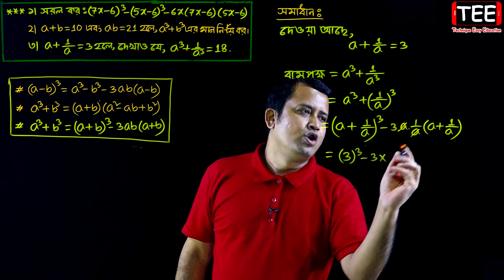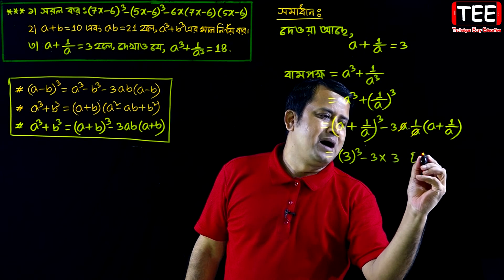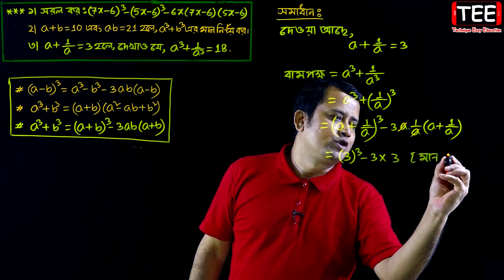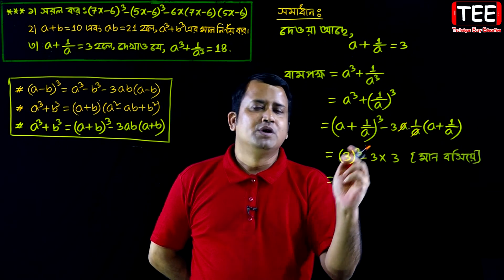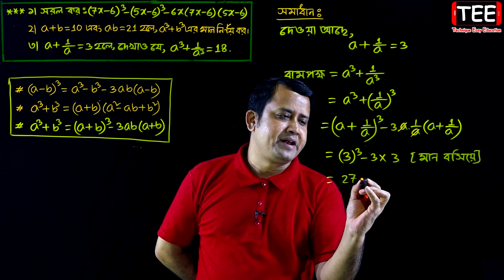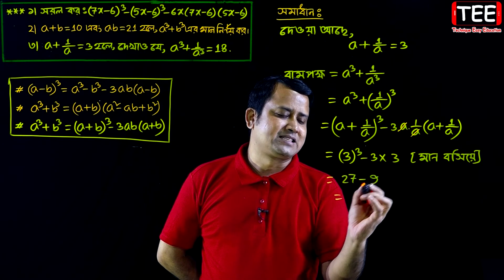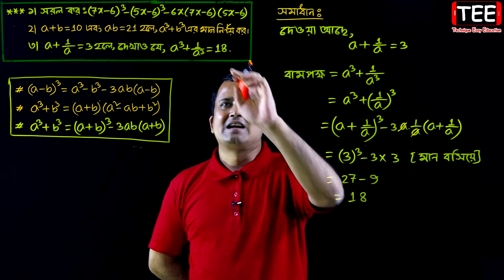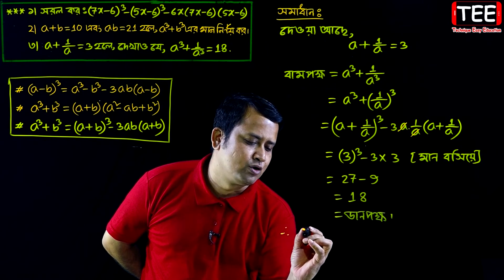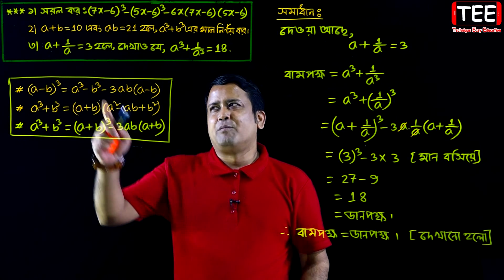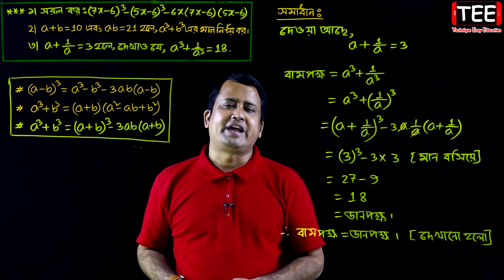Since a plus 1 by a equals 3, we substitute: 3 cube minus 3 into 1 into 3. That gives 27 minus 9, which equals 18. So a cube plus 1 by a cube equals 18. We have shown this result clearly.